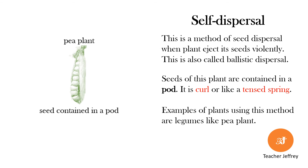Plants with seeds contained in pods use an explosive method of seed dispersal — they eject seeds once the pods are dry. The pods are usually curled and spring violently to eject their seeds. This method of seed dispersal is also called ballistic dispersal.